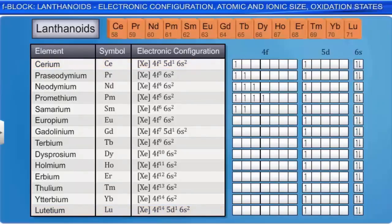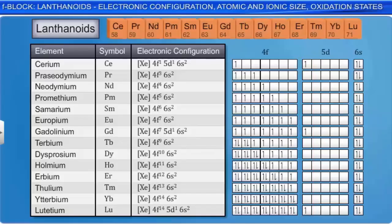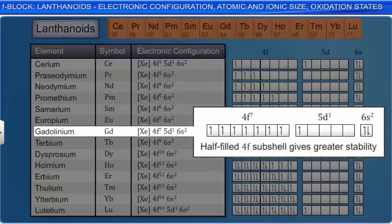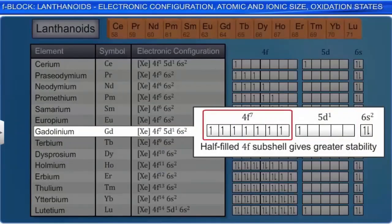However, it is energetically favourable to move the single 5D electron to the 4F level for most of the elements, except cerium, gadolinium, and lutetium. The reason why gadolinium has a 5D1 arrangement is that this leaves a half-filled 4F subshell, which gives greater stability. Lutetium has a 5D1 arrangement because the F subshell is already full.